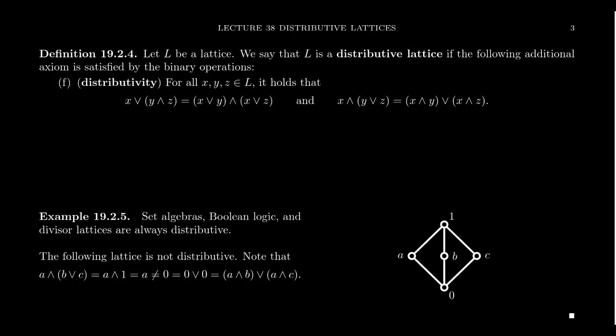We say that a lattice L is a distributive lattice if, in addition to the axioms we already have, we have the distributive axiom. Given any elements X, Y, and Z inside the lattice, we have that join distributes over meet: X join (Y meet Z) is equal to (X join Y) meet (X join Z).